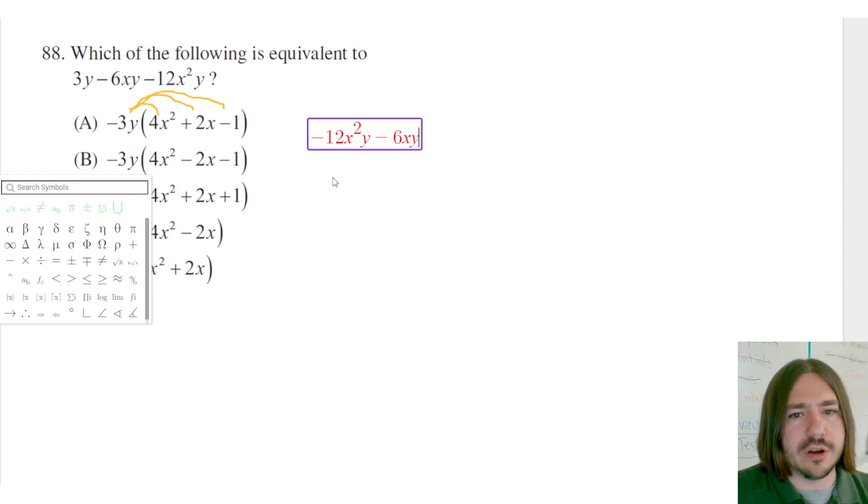So is the answer gonna be A here? Oh wow, that'd be great. It'd be a good way to end this video series. Negative 3y times negative 1 is gonna be positive 3y, so we get our answer right off the bat.